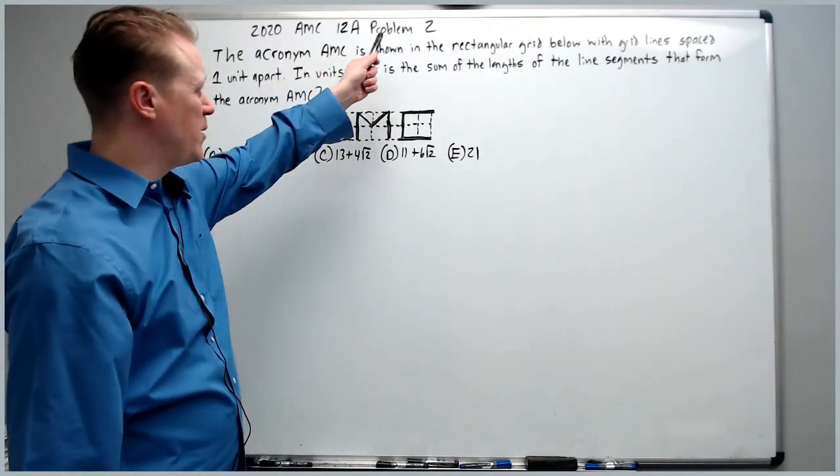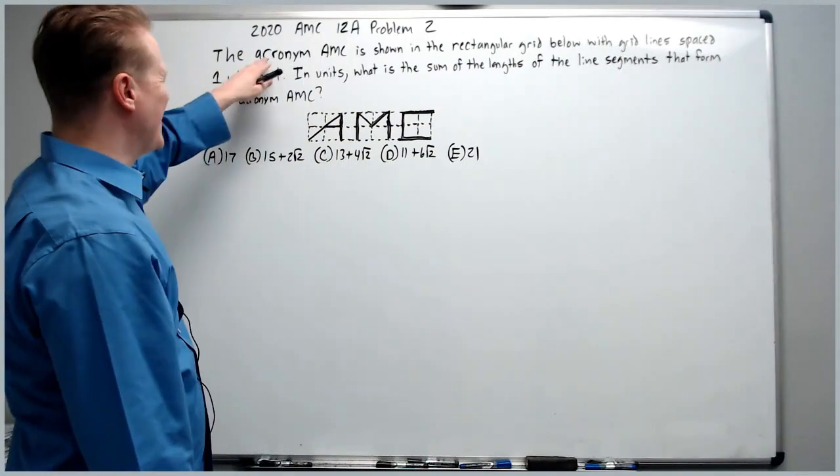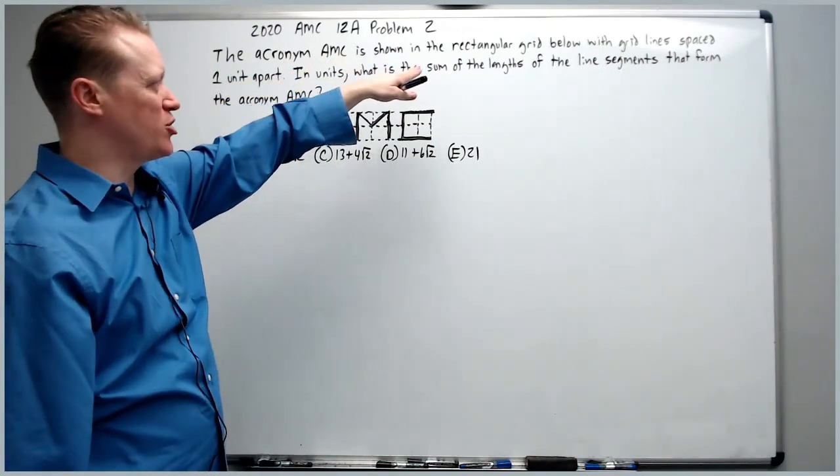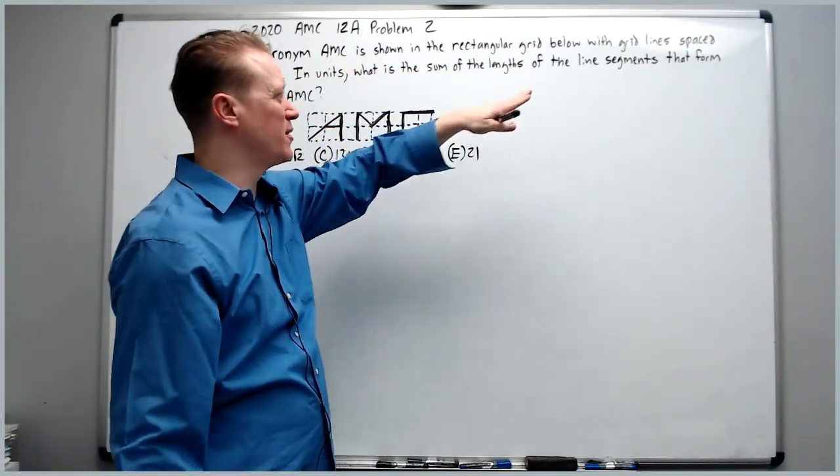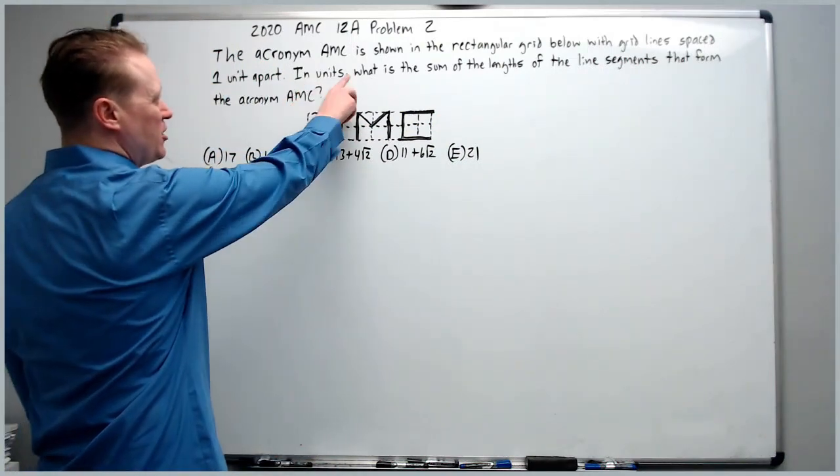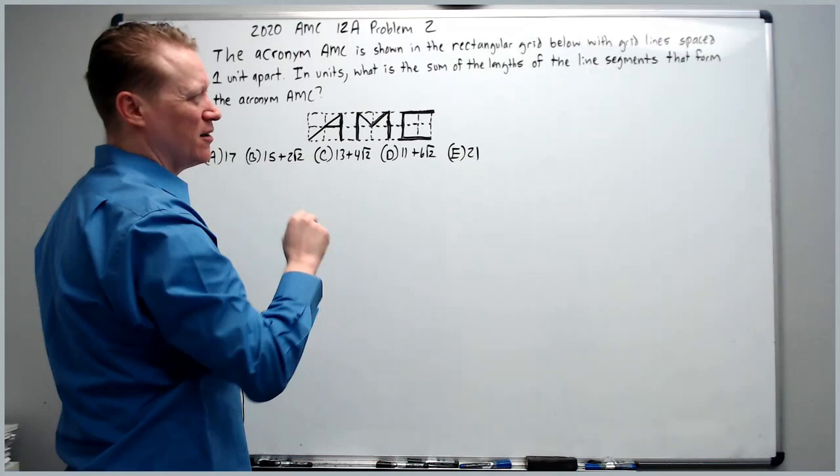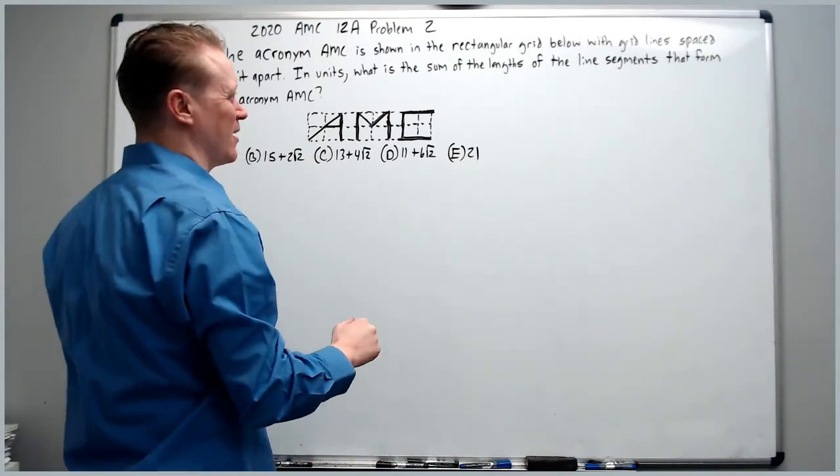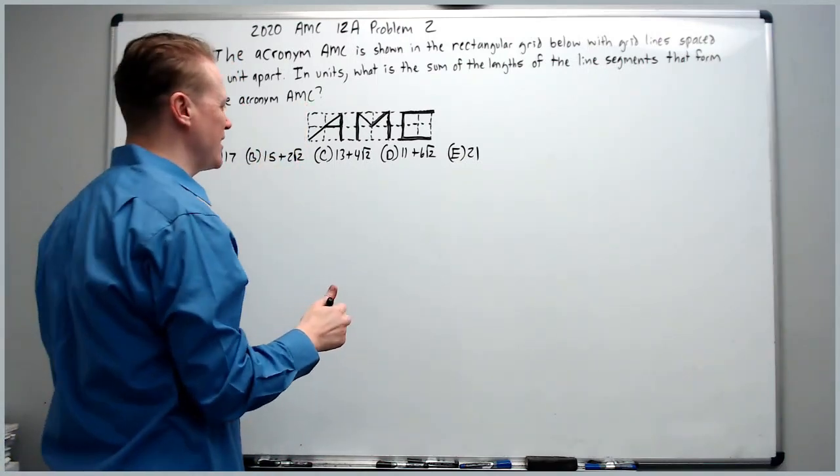And on to the 2020 12A problem number two. The acronym AMC is shown in the rectangular grid below with grid lines spaced one unit apart. In units, what is the sum of the lengths of the line segments that form the acronym AMC?